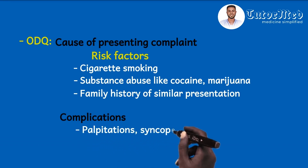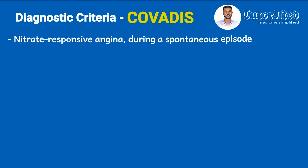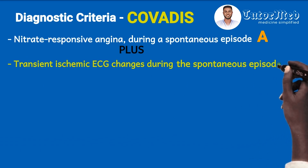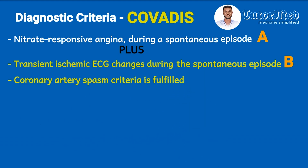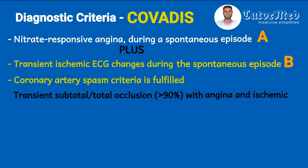The diagnostic criteria for a definitive or suspected diagnosis of vasospastic angina is called COVARIATES — which stands for Coronary Vasomotor Disorders International Study. In its simplest form, the parameters are: (A) nitrate-responsive angina during a spontaneous episode; (B) transient ischemic ECG changes during the spontaneous episode; and (C) coronary artery spasm criteria fulfilled — a transient subtotal or total occlusion of more than 90 percent with angina and ischemic ECG changes, either spontaneous or provoked.